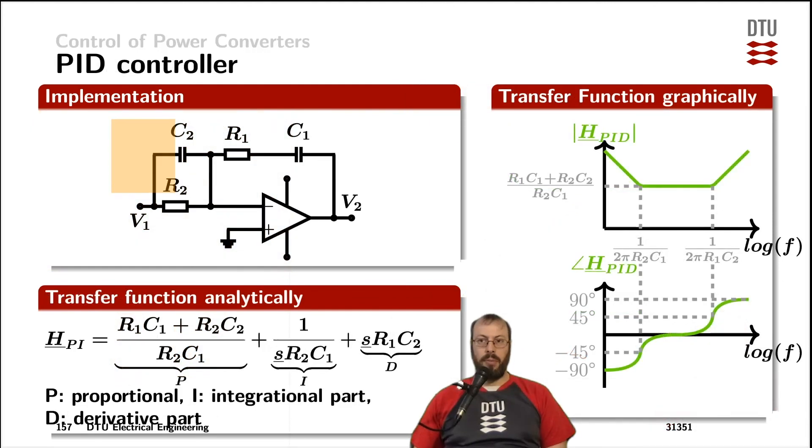Now the PID controller contains another capacitor and therefore another zero. It ends up having a proportional part, an integrational part, and a derivative part.